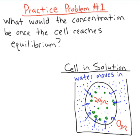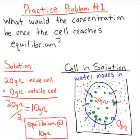Now there are some practice problems. There is a little bit of math, but if you know how to find the average of something, you'll be fine. Practice problem number one: if we put a cell in pure water — zero solutes — what would the concentration be once the cell reaches equilibrium? You just take the average of the concentration outside and inside the cell: add them up and divide by two. The answer is 10 grams per liter. There's 20 grams per liter inside the cell and zero grams per liter outside, so 20 divided by two equals 10.